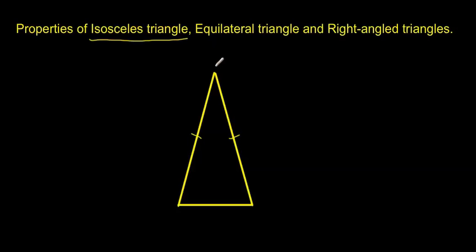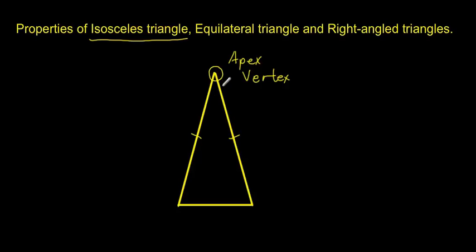We have to remember that the corners are called a vertex, or vertices in plural, and this top corner is called the apex. The apex is the point at the top — it's the main angle of the three.